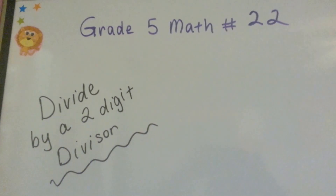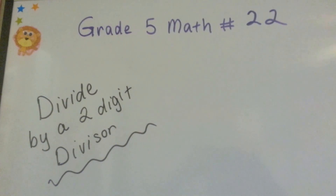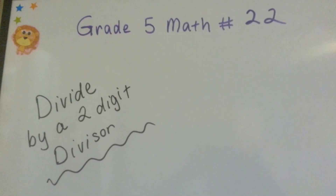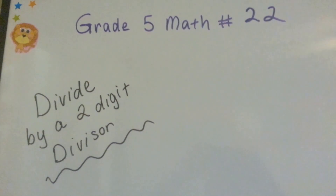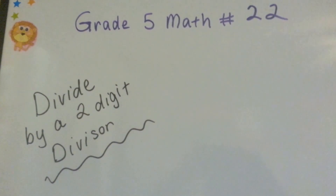Grade 5 math, number 22: divide by a two-digit divisor.